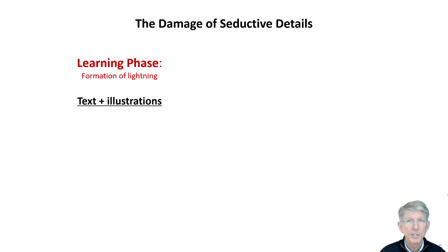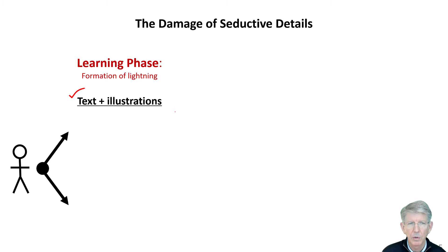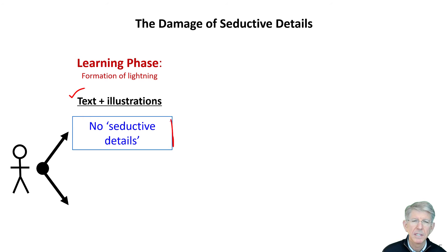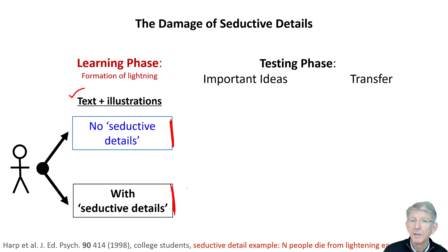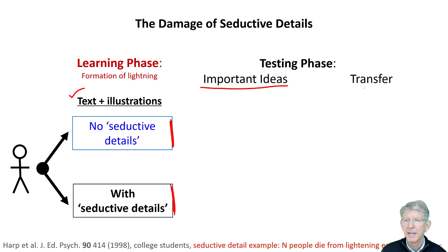This next study is going to show another example of the damage of what are called seductive details. There's going to be a learning phase about the formation of lightning. Students will see text plus illustrations for how lightning is formed, randomized to two conditions. In one case, they'll have no seductive details. Seductive details are things like how many people die per year from lightning strikes, which has nothing to do with how lightning is formed — it's just an interesting fact. The other group will get seductive details. Then they'll be tested at a later time for important ideas and for transfer to related problems.